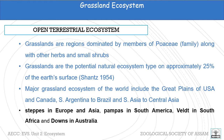Grasslands are present in different parts of the world and they are known by different names. For example, they are called steppes in Europe and Asia, pampas in South America, veld in South Africa, and downs in Australia.